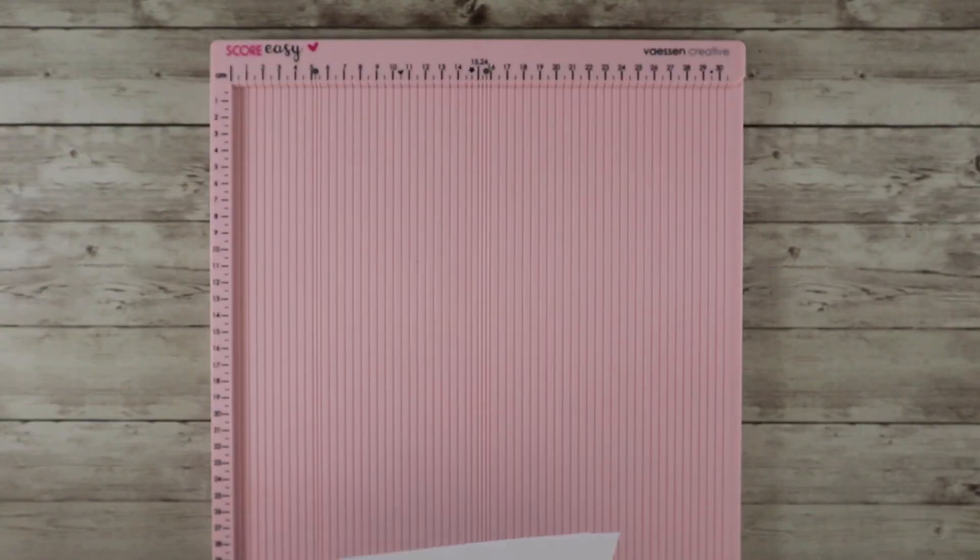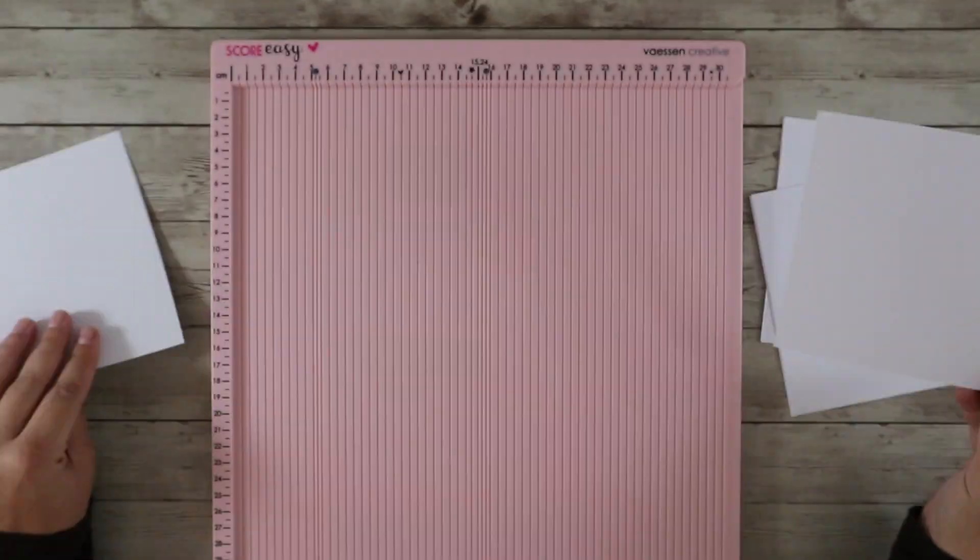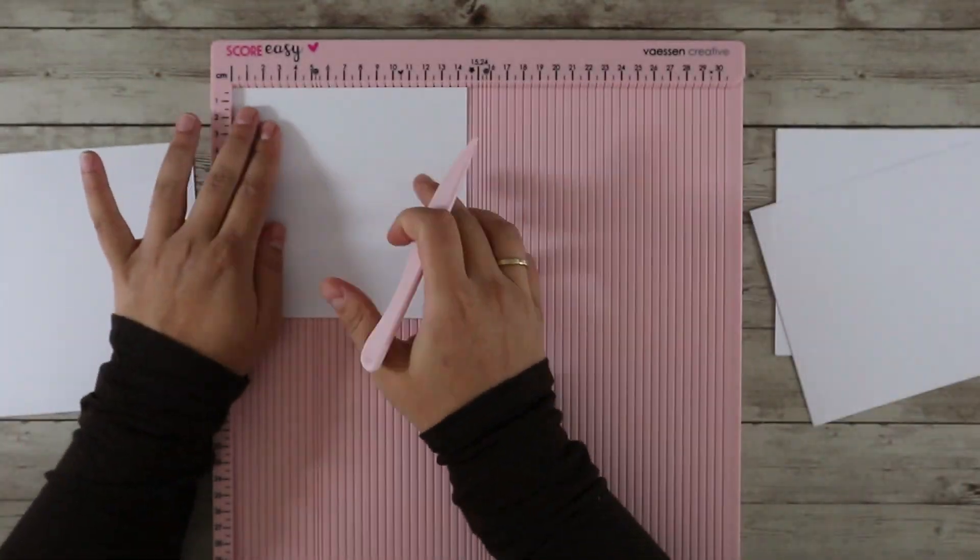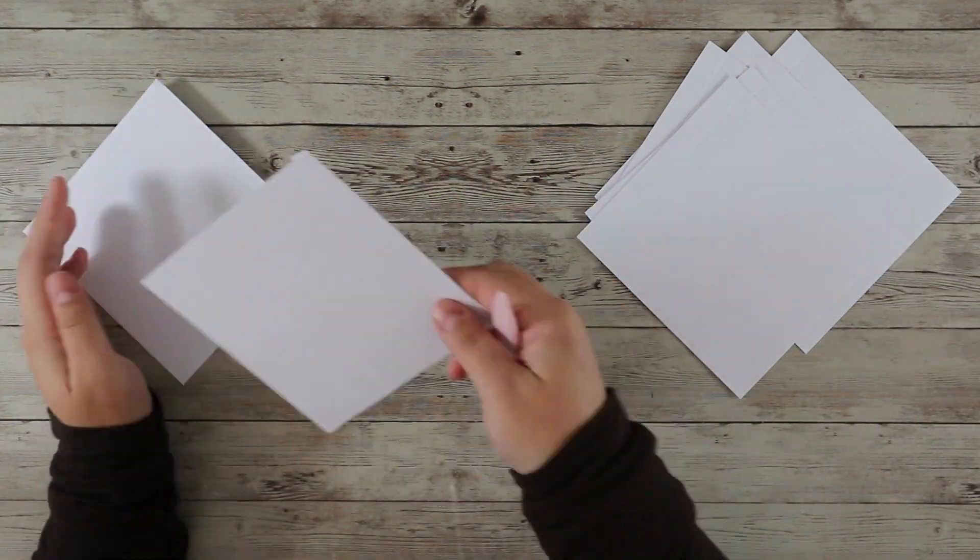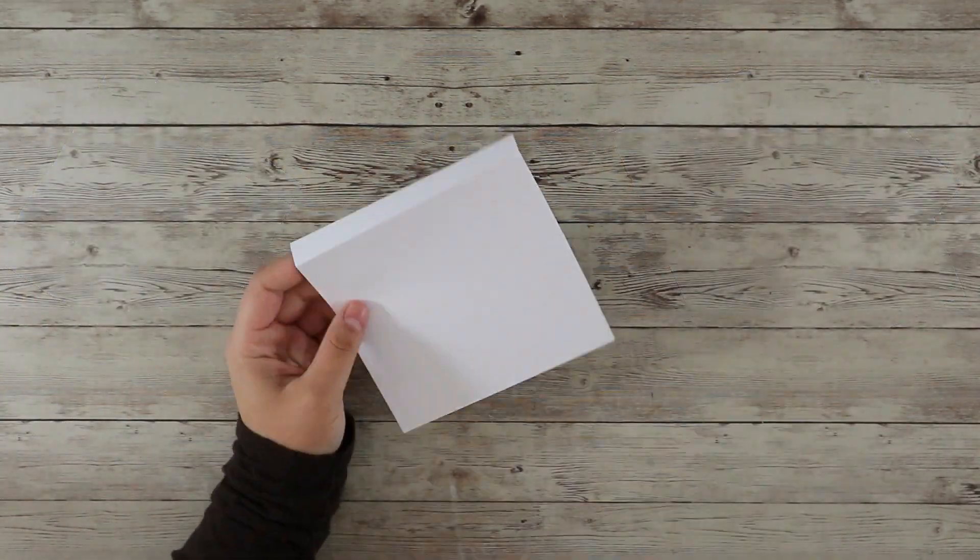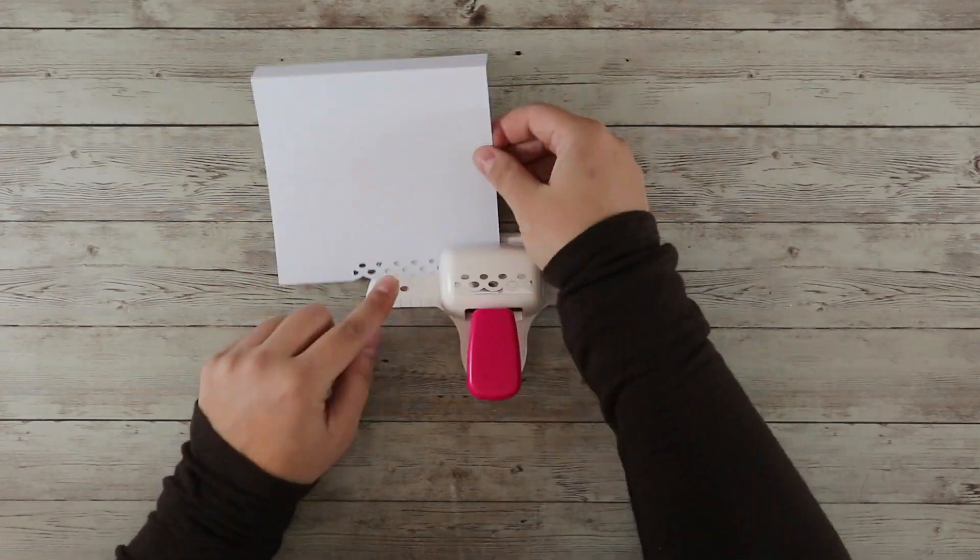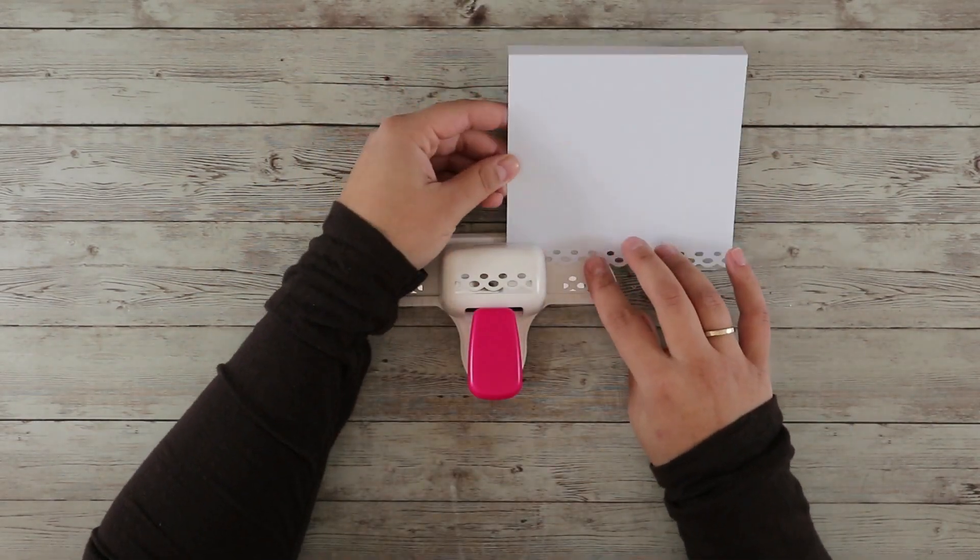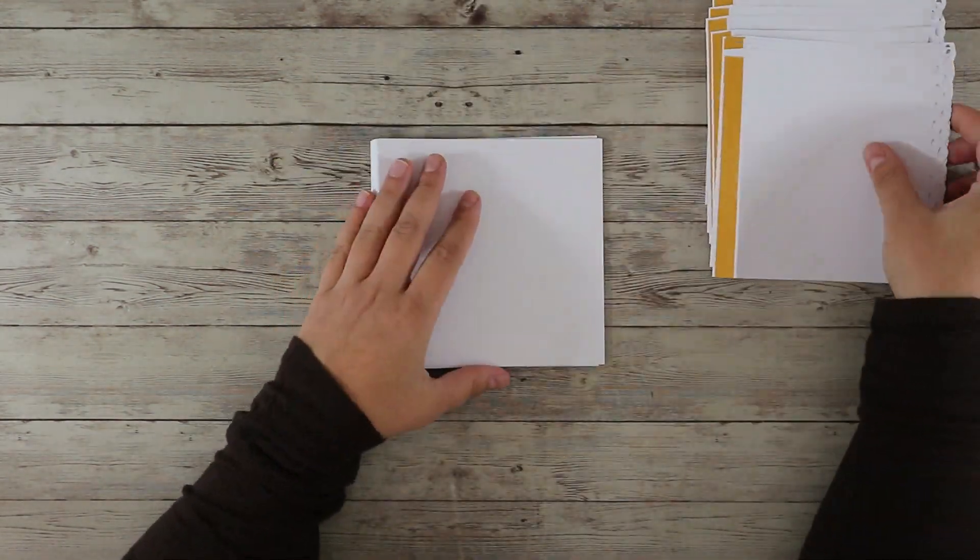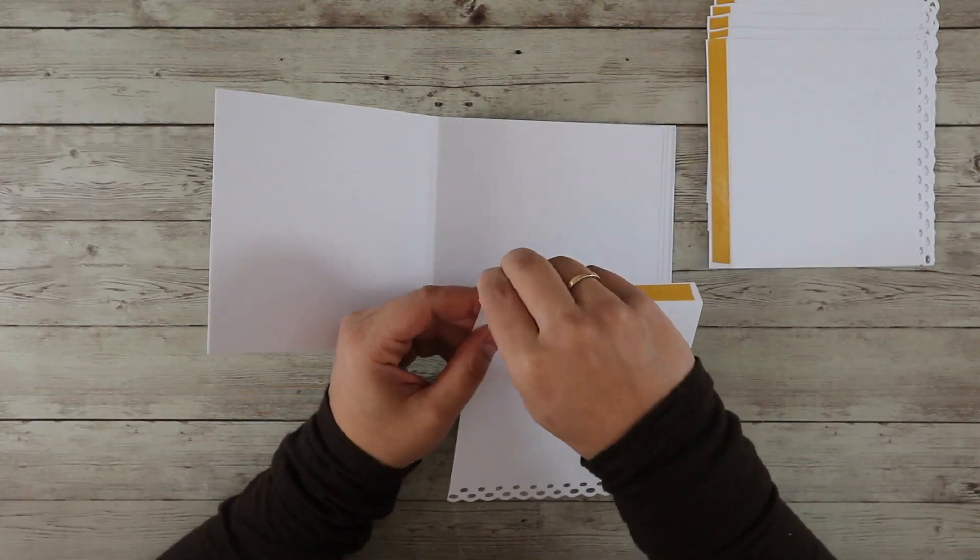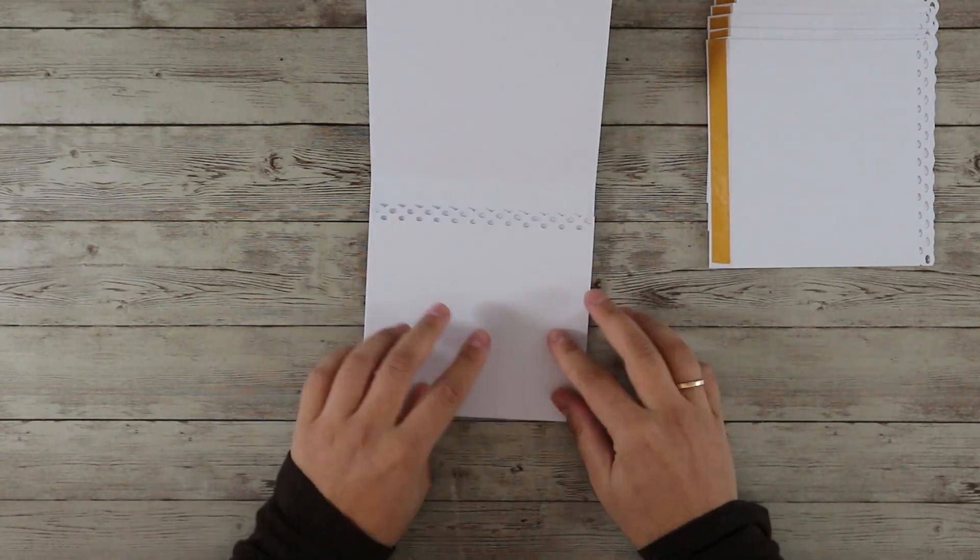For the flaps I cut 8 papers 14.5 x 14 cm, score them on the long side at 1.5. I burnish well with a bone folder and I am using a border punch to add a nice border in my flap. To place them on the album I am using double sided tape on all the 1.5 cm scored parts, but you can use liquid glue as well.